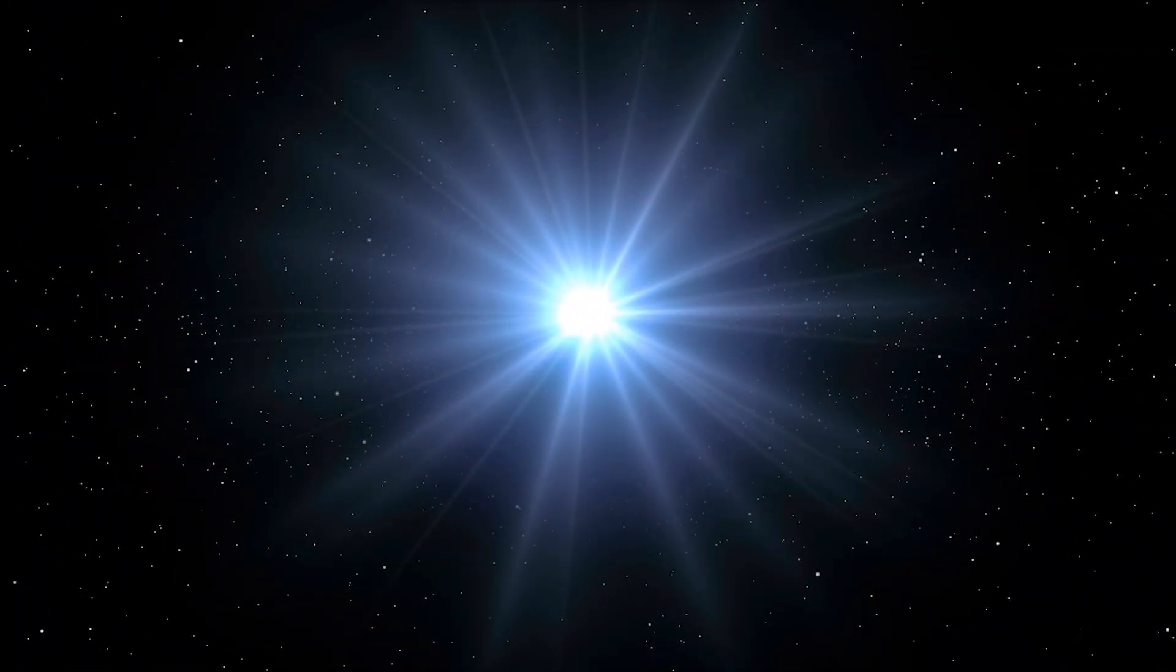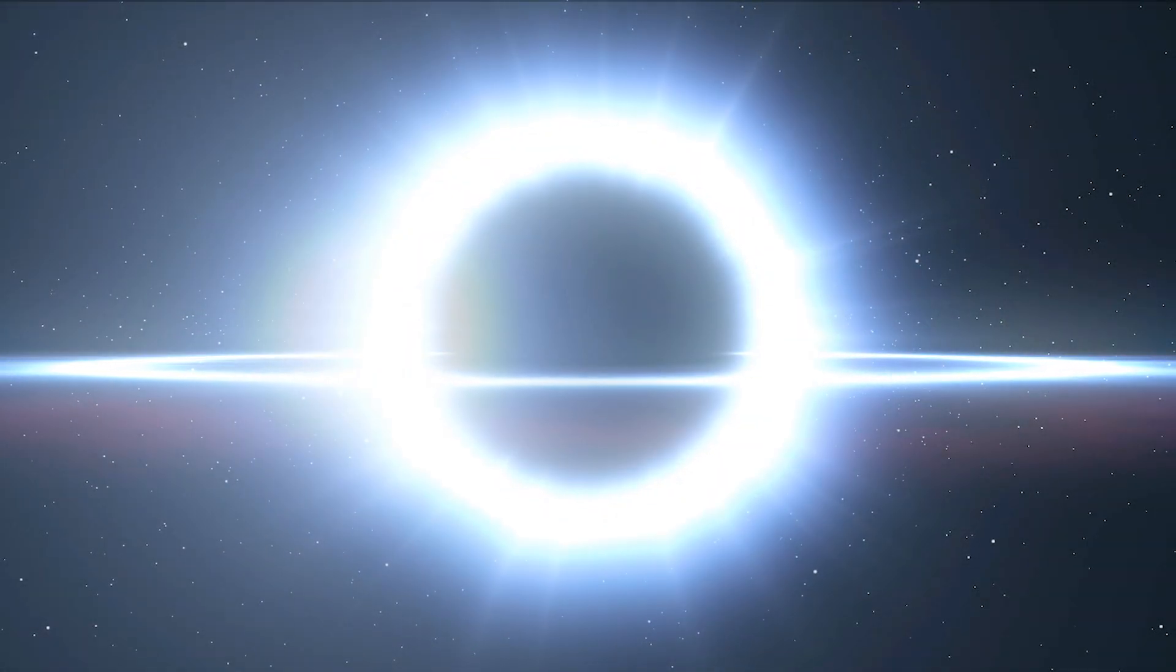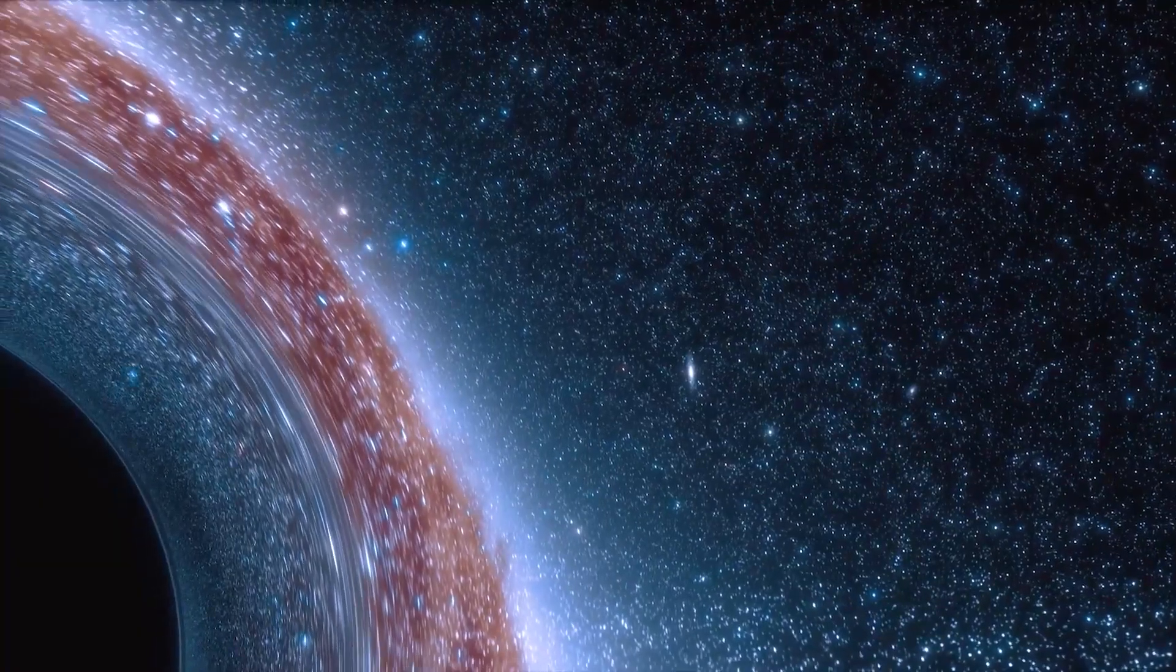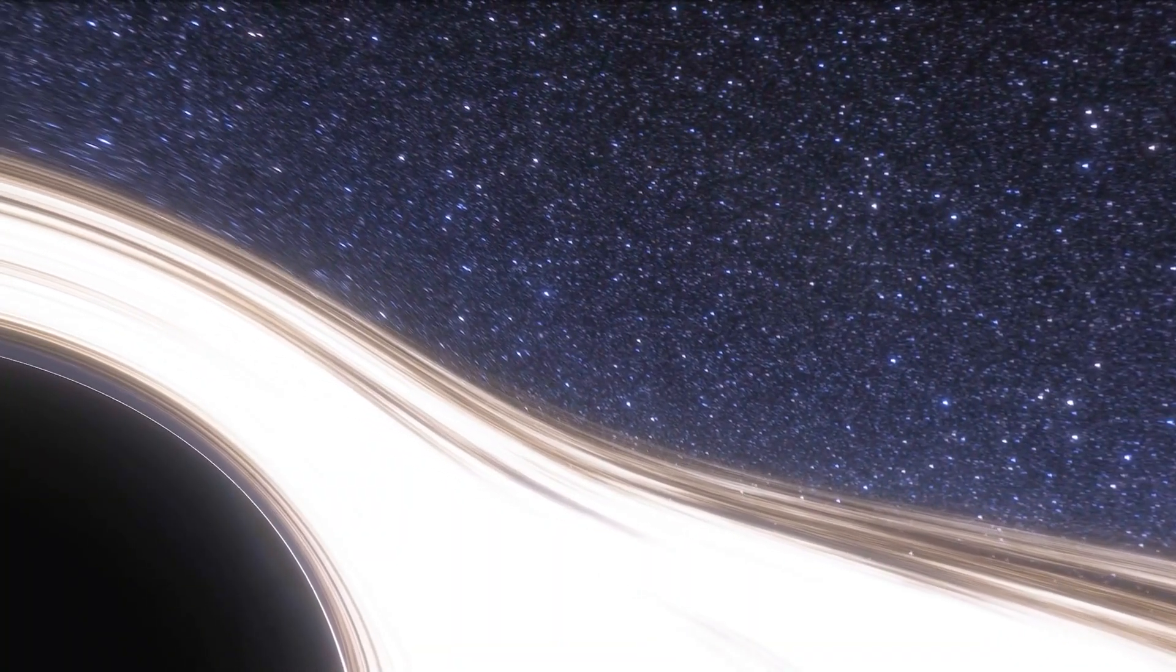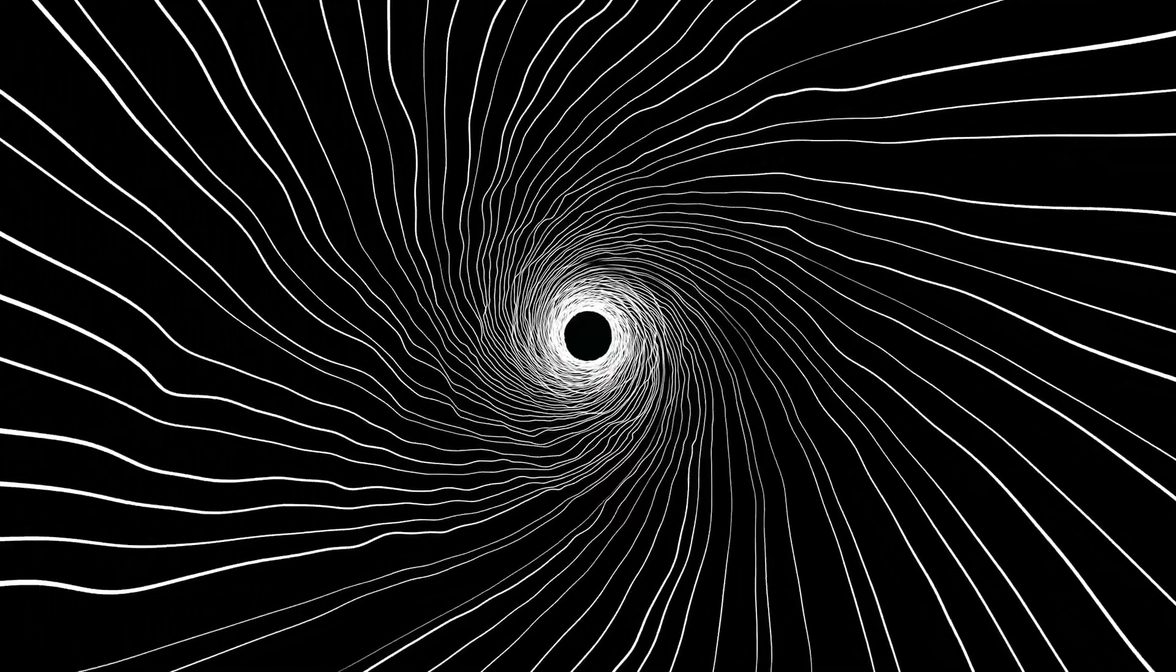When huge stars experience gravitational collapse near the end of their lives, stellar black holes form. The gravity of the core expands as the core contracts, expelling the surrounding layers as it does so. This causes everything to be drawn into a singularity, which is a tiny, infinitely dense point.